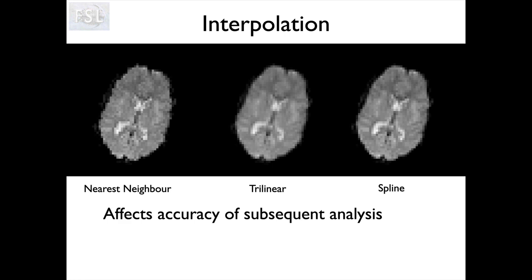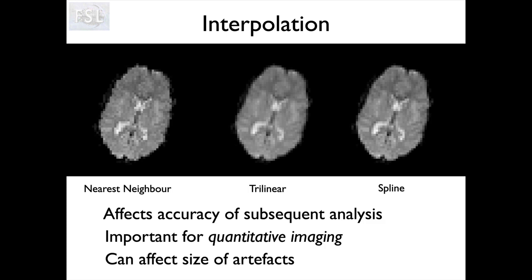They all have pros and cons. What you're going to do with the image determines what you care about most. If using it for quantitative imaging, and a model assumes FA must stay within a given range, you might not want to use spline. Quite often we do use trilinear for quantitative imaging - for something like fMRI, a little bit of smoothness can benefit us statistically. Another concern is size of artefacts: if you have a particularly large artefactual value, say from inflow in a blood vessel, nearest neighbor and trilinear will keep that very contained near the original point, whereas spline can spread it over a larger area with ripples going out.